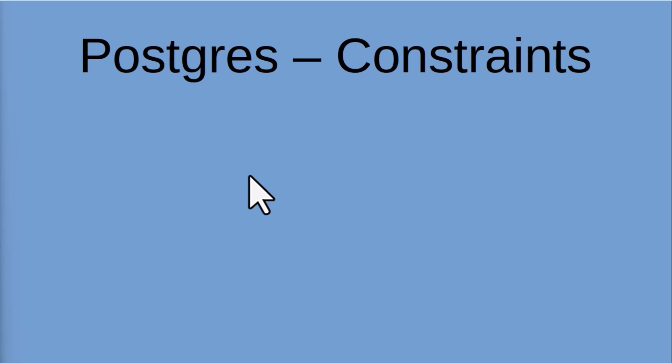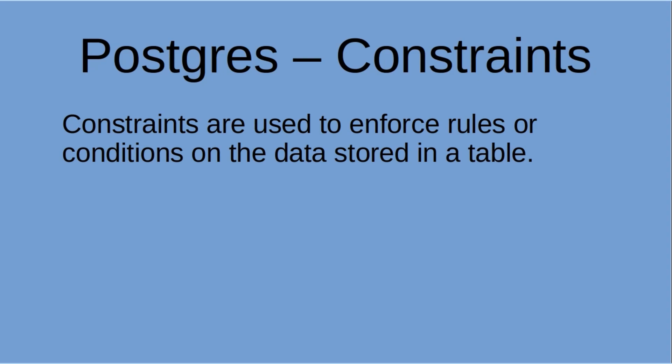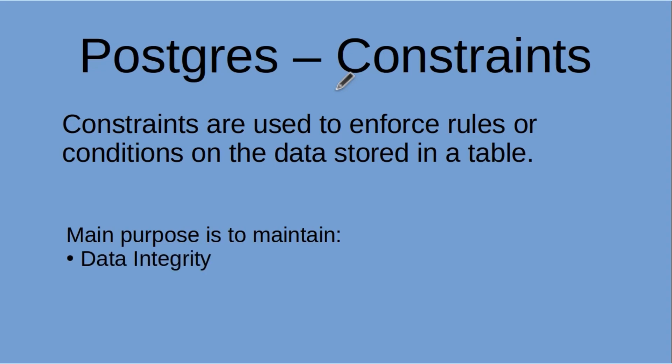We're going to be talking about Postgres constraints today. Constraints are utilized to enforce rules or conditions on the data stored in a table. The whole point of a constraint is to maintain data integrity and consistency. These are just a few of the principles a database should follow — atomicity, consistency, isolation, and durability — ACID for short.